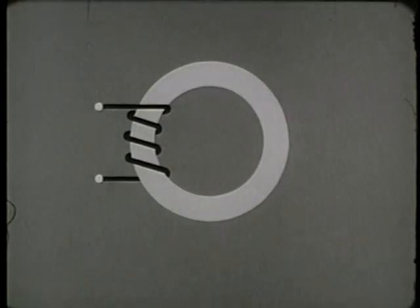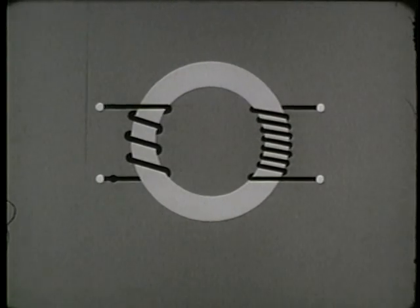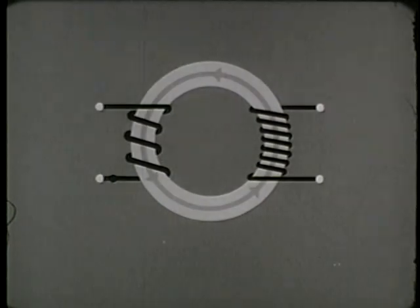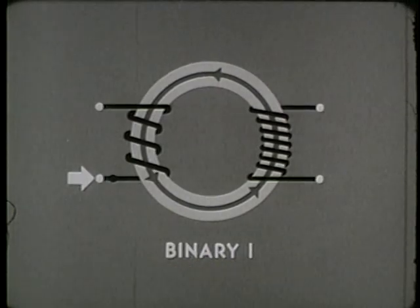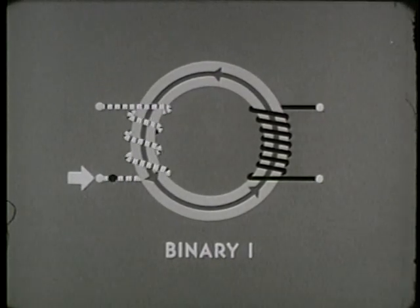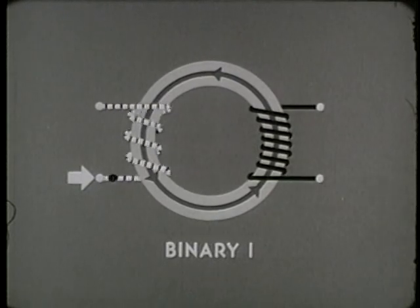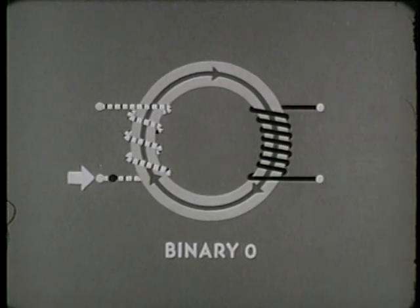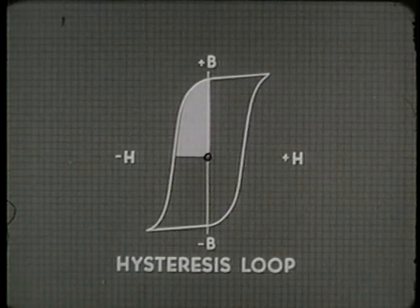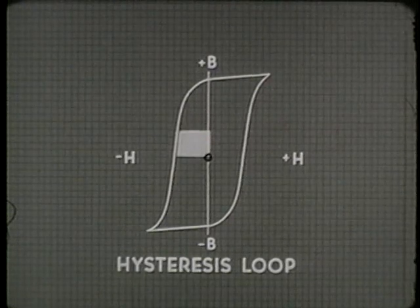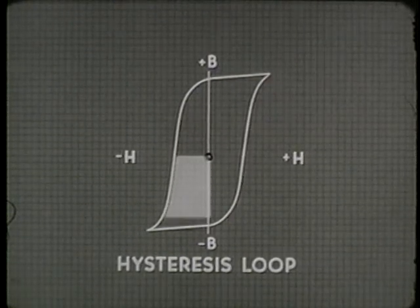How do we get information out of a core? By means of a second winding. Let's follow the transfer of information from input to output. Assume the core is in a state of positive residual magnetism — in the binary one state. To change the core to binary zero, we send current into the dot side of the input winding. Dot current switches the core to binary zero, reversing the direction of the magnetic lines of force. The positive residual field collapses entirely and a negative field builds up to saturation.